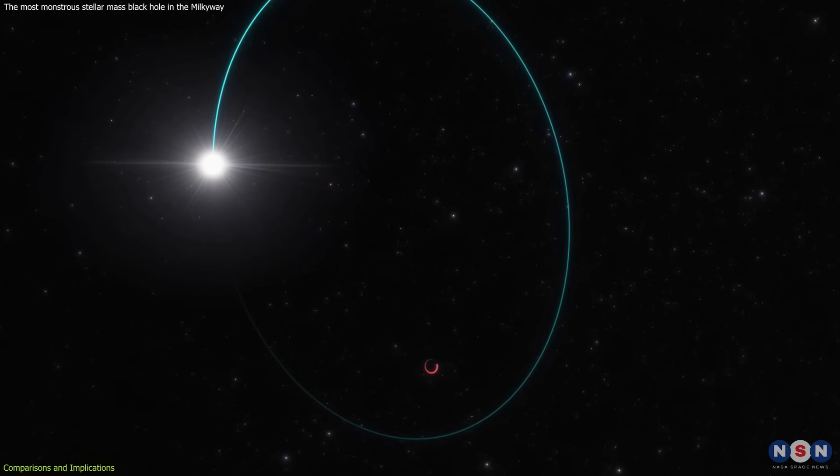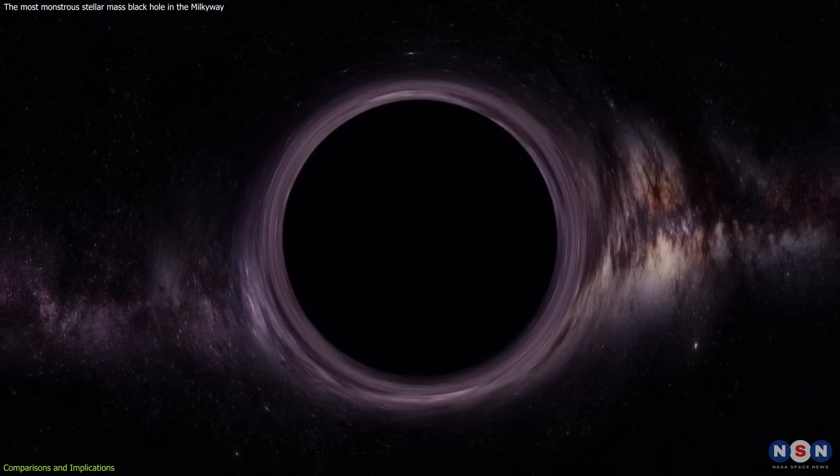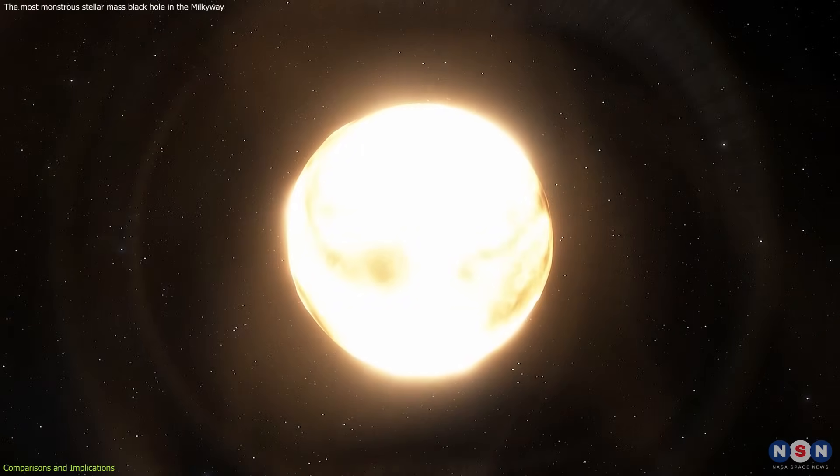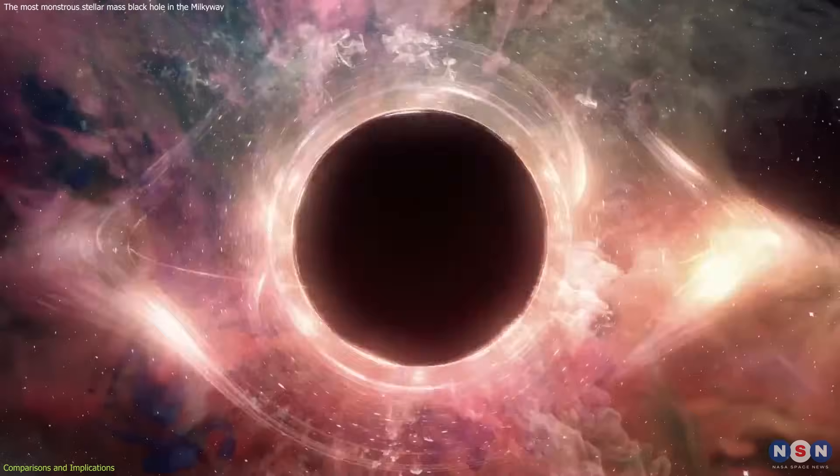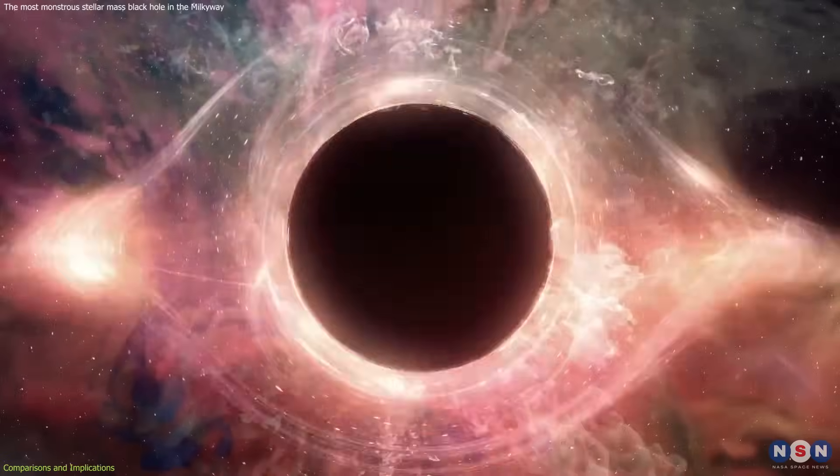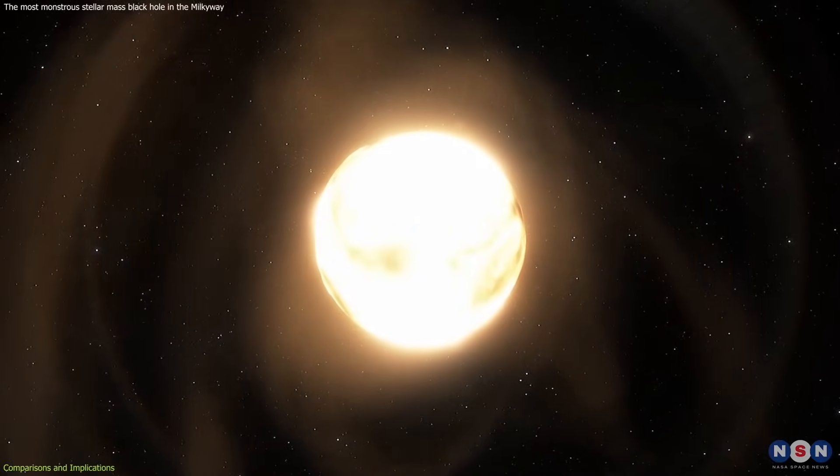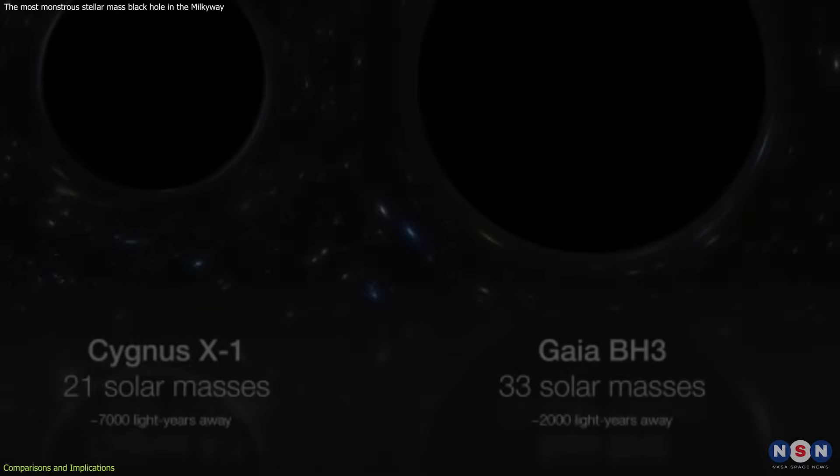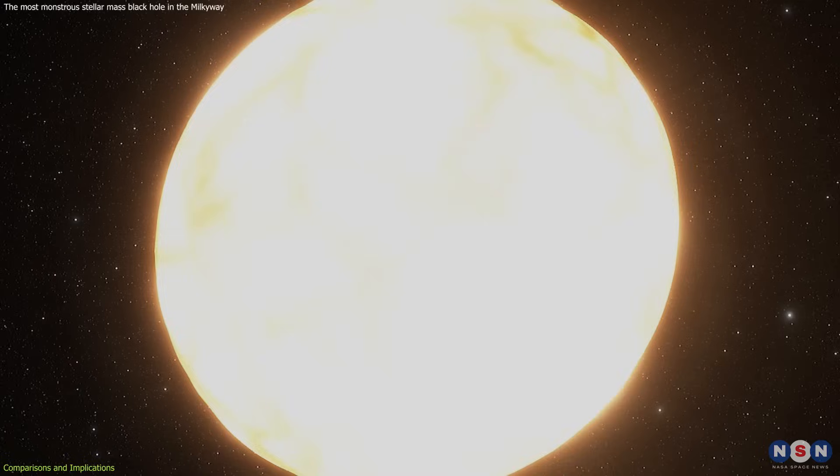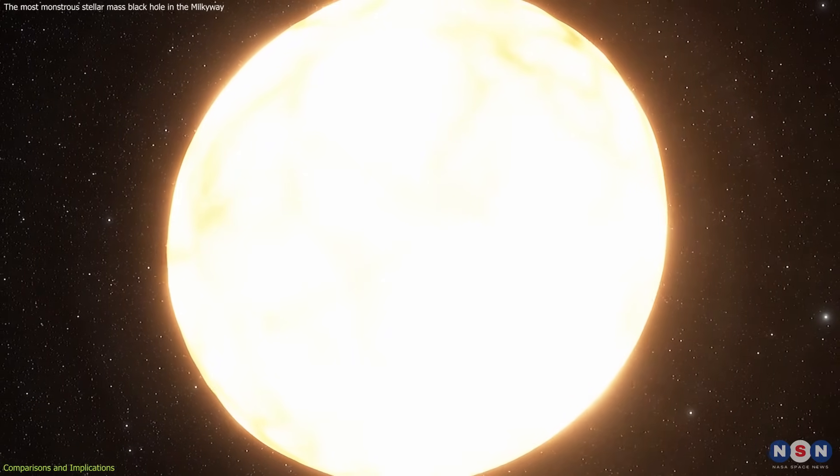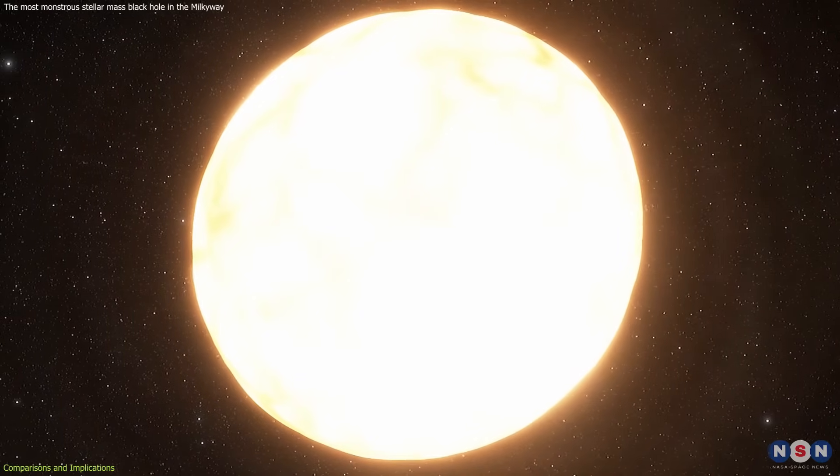This discovery has profound implications for the study of black holes and stellar evolution. The formation of such a massive black hole from a metal-poor star, as indicated by the characteristics of its companion star, challenges previous assumptions about the conditions necessary for black hole formation. Metal-poor stars, which have fewer elements heavier than helium, were not initially thought capable of producing black holes of such significant mass. This finding implies that our models of how stars live and die, particularly those that are metal-poor, may need substantial revision.